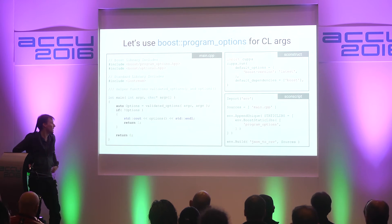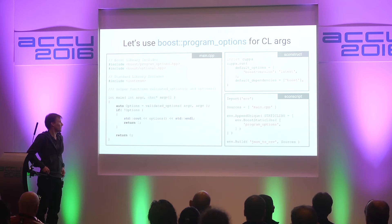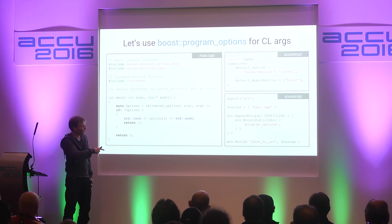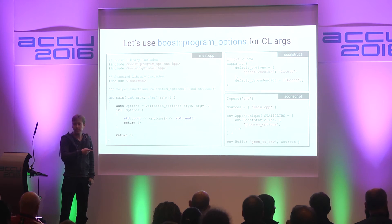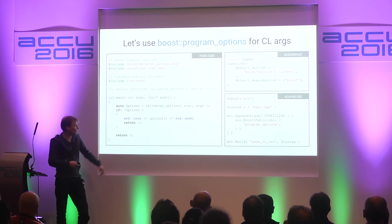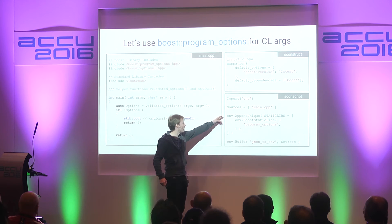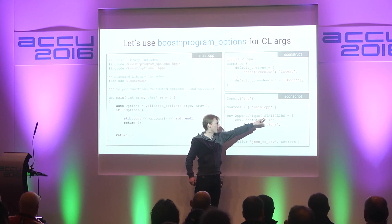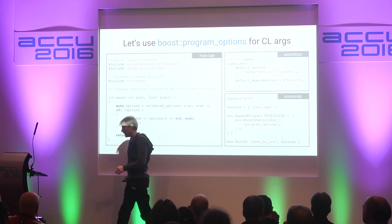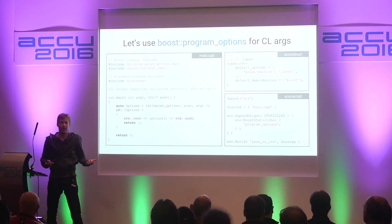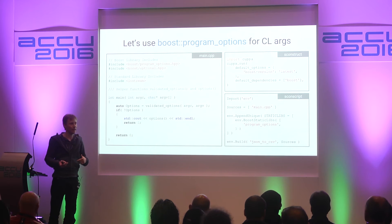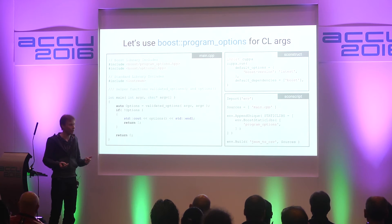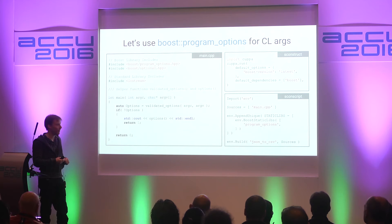In the SConscript file we need to do a little bit of work. We need to say that in this case we want to statically link against Boost program_options. This here is standard SCons - you append_unique to your environment. Static_libs is a COPPA thing. In SCons by default you just have 'LIBS'. If you want to do static and dynamic linking of different libraries, you have to jump through a lot of hoops - it's almost impossible. And then we just say build a static library.